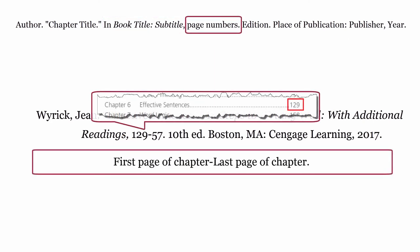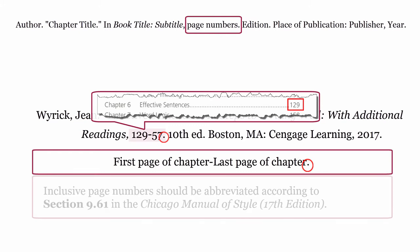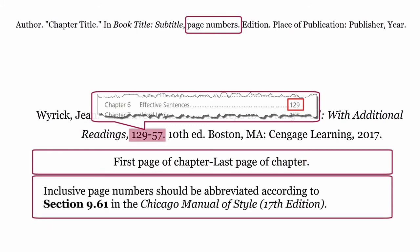Page numbers. The page numbers are formatted using the first page of the chapter, dash, then the last page of the chapter, then a full stop. Inclusive page numbers should be abbreviated according to section 9.61 in the Chicago Manual of Style, 17th edition.